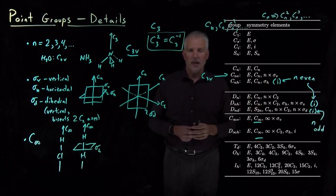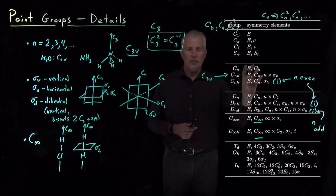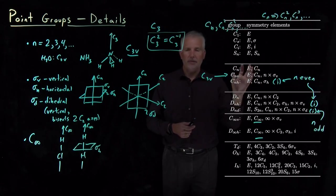We just don't bother to list them in the table because we know if there's a C3, there's also going to be two C3s. If there's a C5, there's going to be two C5s or three C5s or four C5s.